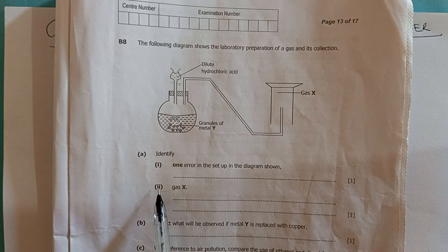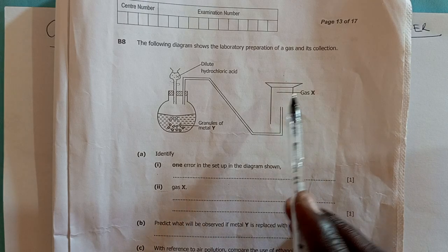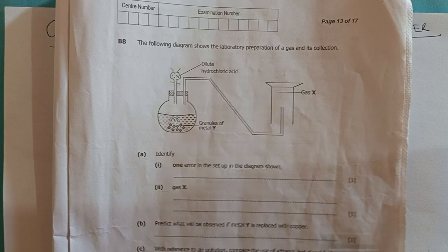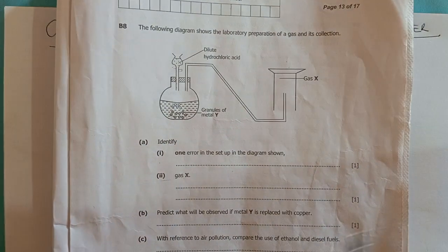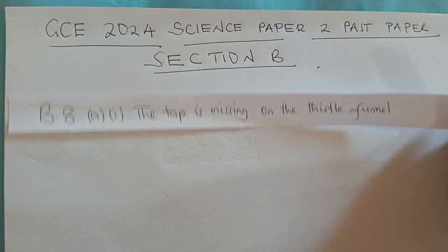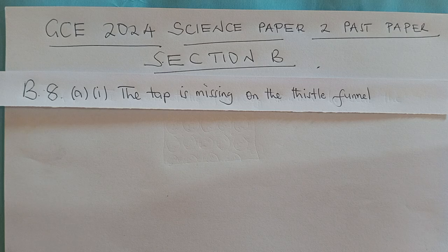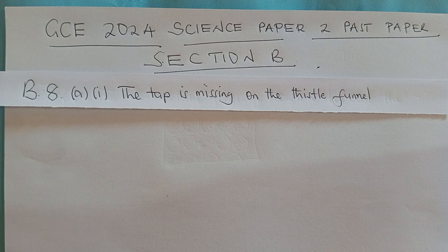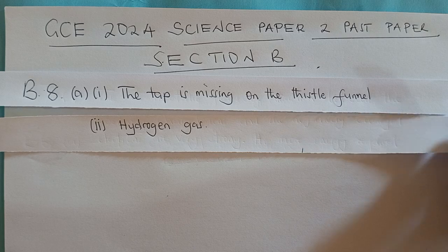And then question A(ii): Gas X. Identify gas X. Of course that is hydrogen. We identified that in the preamble. So the answer would be, for Roman numeral one, the tap is missing on the thistle funnel, and the gas that has been produced, that gas would be hydrogen.